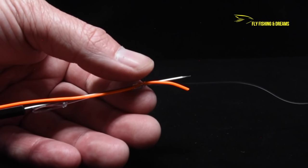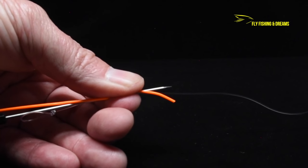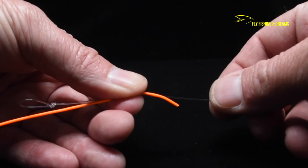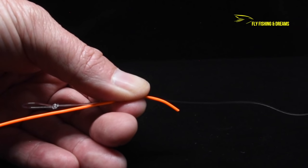Hold the knot tightly with the left hand and remove the bodkin needle. It is very important that you do not let go of the nail knot with the left hand until the knot has been completely tightened.